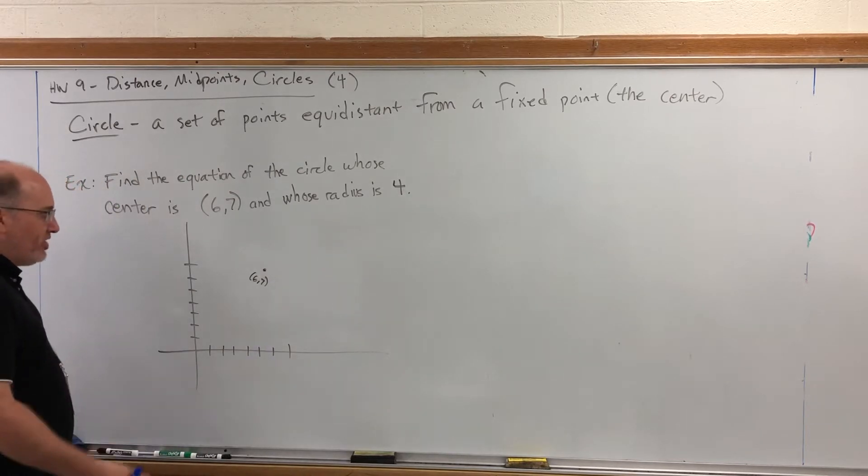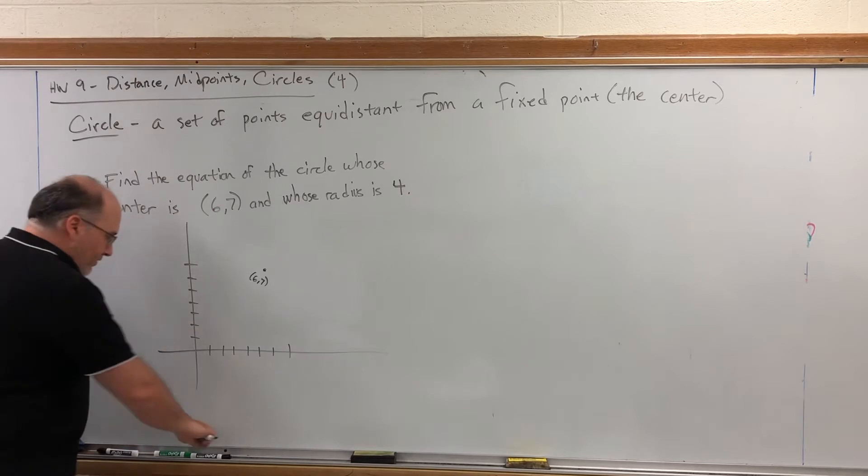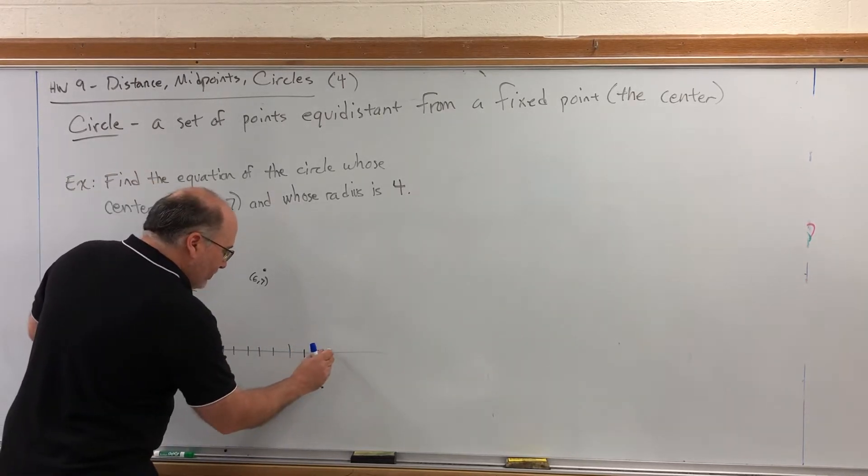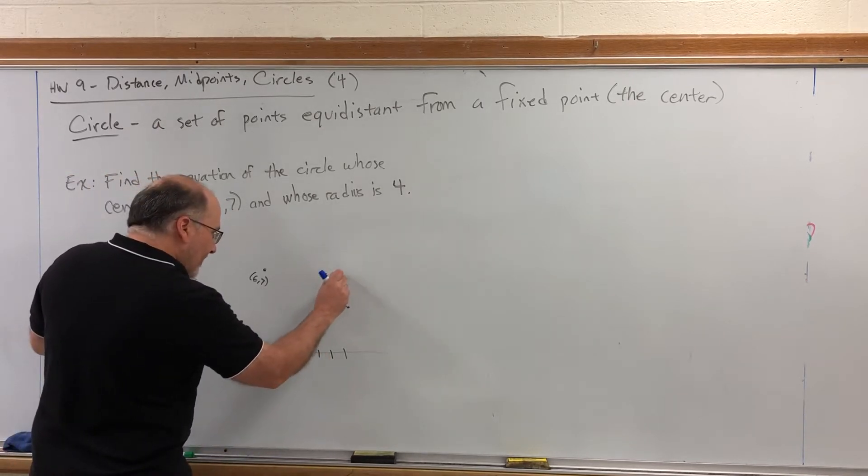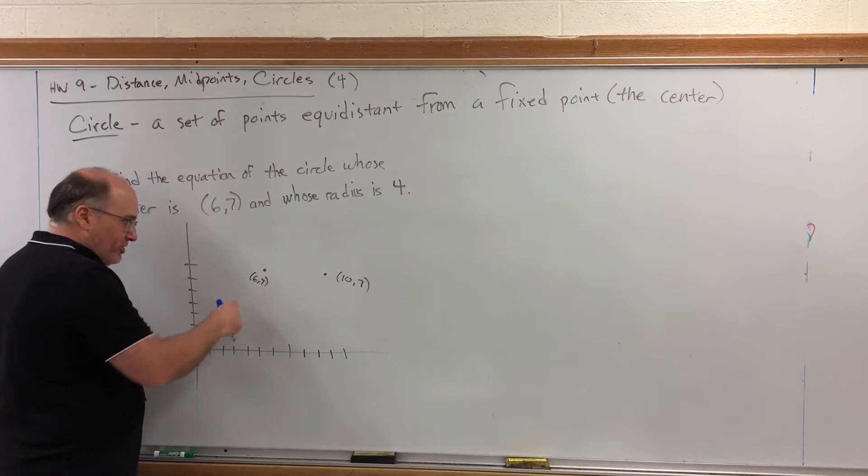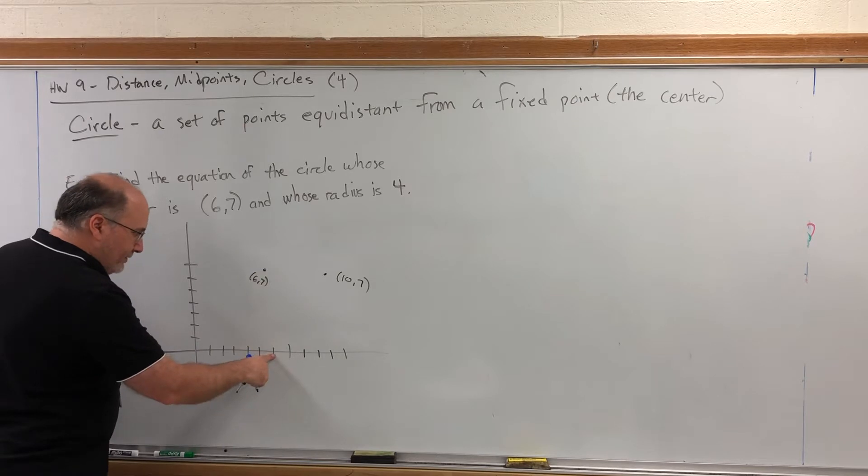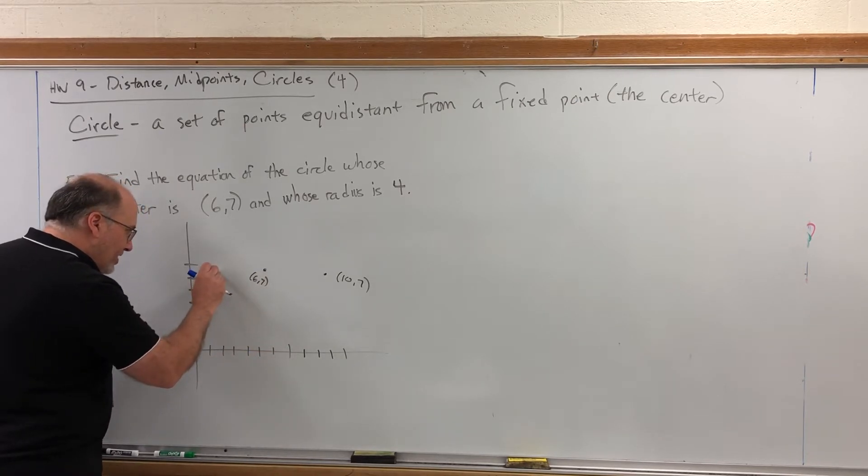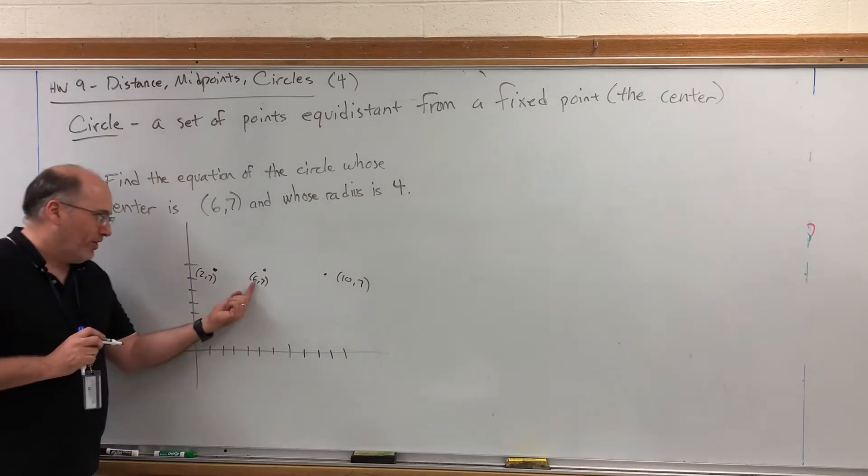Now, the easiest direction to go from the center is up, down, left, and right. For example, if I start at (6,7) and go four more spaces to the right because the radius is 4, then that would put me at (10,7) because I went four spaces beyond 6. However, if I went four spaces to the left of the center, that would put me here at (2,7) because I went 4 less than 6.